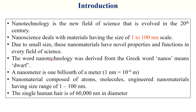The word nanotechnology was derived from the Greek word 'nanos,' meaning small size. One nanometer is a billionth of a meter — 1 nanometer equals 10 to the minus 9 meters. Nanomaterials are very, very small and are composed of atoms and molecules. Engineered nanomaterials have a size range of 1 to 100 nanometers. For example, a single human hair is 60,000 nanometers in diameter.